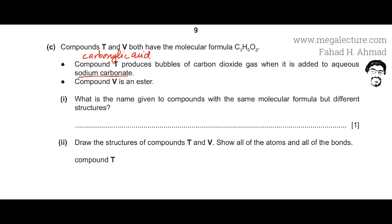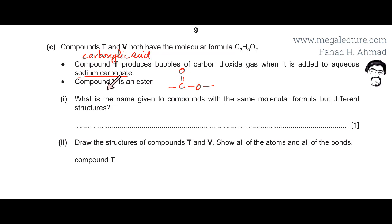The other information given is about compound V — it is an ester. The ester functional group has a C double bond O and O in the middle, with carbon chains on both sides. So we have figured out that T is a carboxylic acid and V is an ester. The question asks what name is given to compounds with the same molecular formula but different structures — they are called isomers.